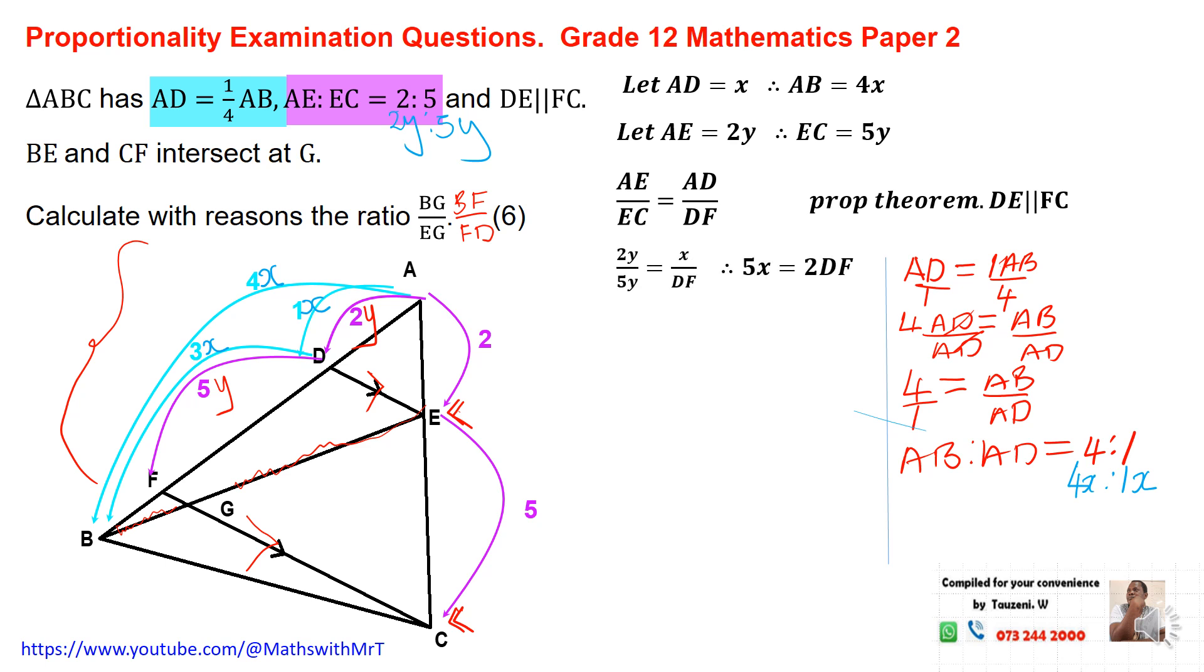So from this instruction, we can now do substitution to carry on. The value of AE, from what we have put up here, we said this ratio is in terms of Y. So this is 2Y divided by 5Y. That's my AE over AC. This is equal to AD. We have expressed AD as X. We're using this ratio here. 1X divided by DF. And DF is this part here, which is equal to 5Y. But I want these measurements to be the same. So I'm going to now determine the value of DF.